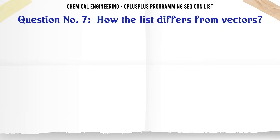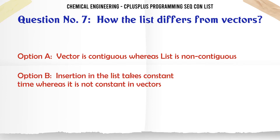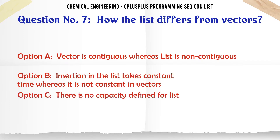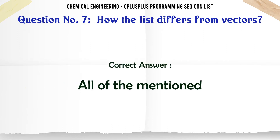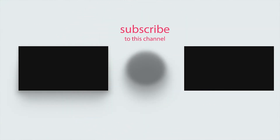How does the list differ from vectors? A. Vector is contiguous whereas list is non-contiguous. B. Insertion in the list takes constant time whereas it is not constant in vectors. C. There is no capacity defined for list. D. All of the mentioned. The correct answer is D: All of the mentioned. Thank you.